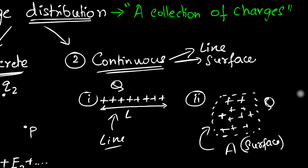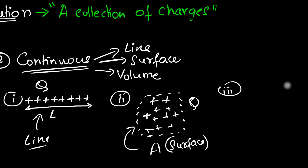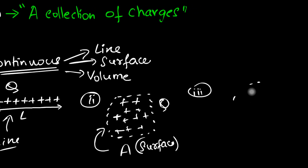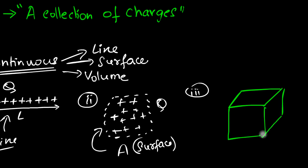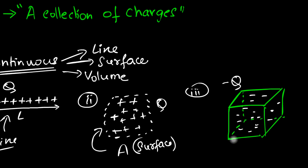The third kind is a volume distribution, where charges are distributed over an entire volume. Imagine a cubical box with charges inside — we could have some negative charges in that box. We say the total charge is negative q and the box has volume V. This is a volume distribution of charge.